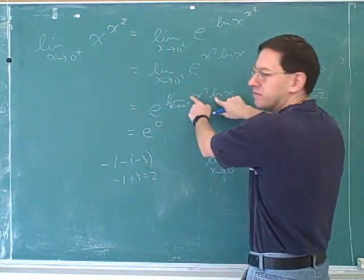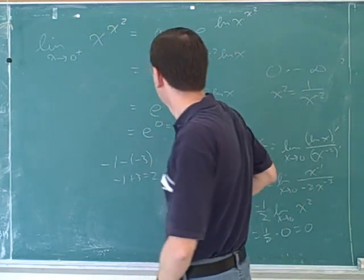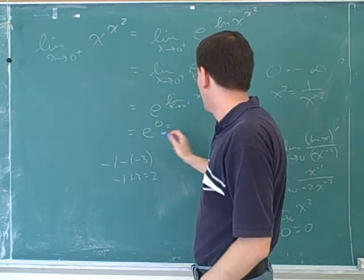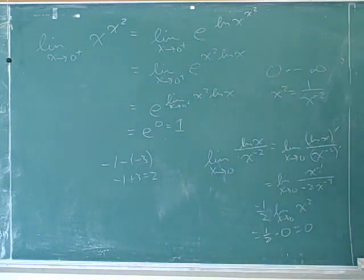Well, we just figured out this over here. We figured out that this was 0. So, I'm going to plug that in over here. And now I have e to the 0, which is 1. So, the answer I get is 1. Is that what you got? Yeah. Okay.